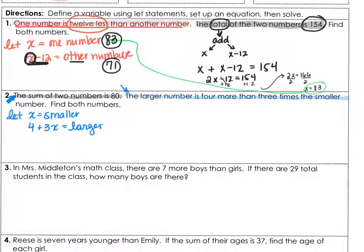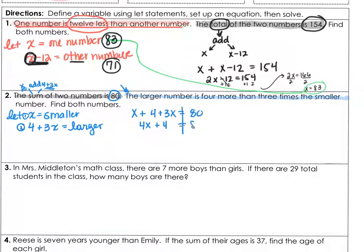Now, what relates these two together is this black highlighted sentence: the sum of two numbers is 80. The sum means add, and we are adding the two numbers, which are x and 4 plus 3x. Adding them together to make 80. So x plus 4 plus 3x equals 80. Now we'll solve — combine like terms, subtract by 4, divide by 4, and we get that x is equal to 76 divided by 4, which is 19.